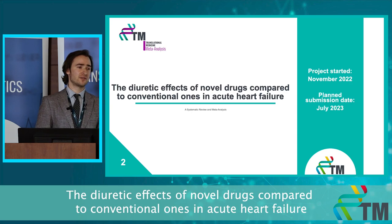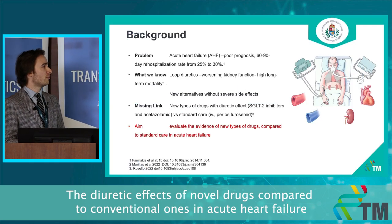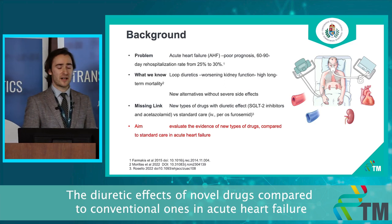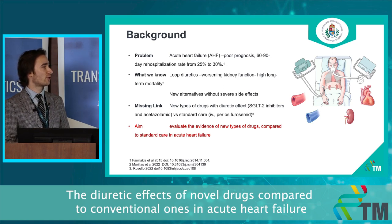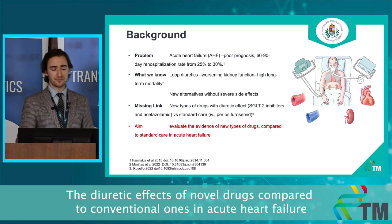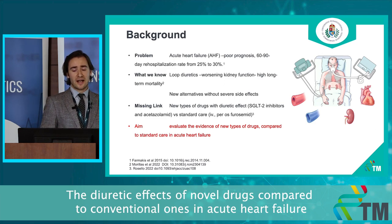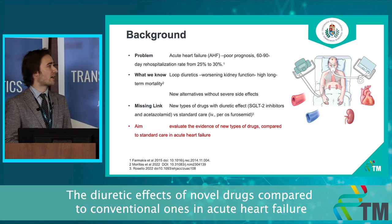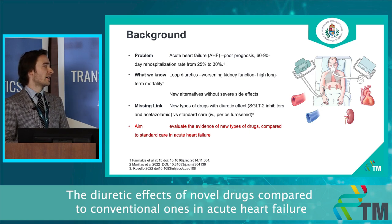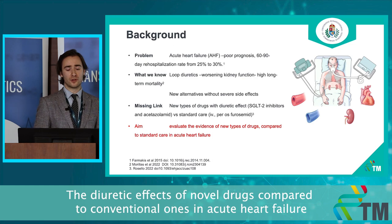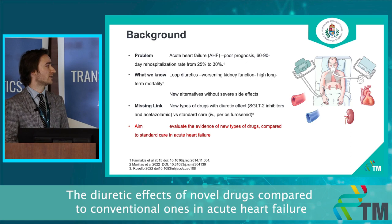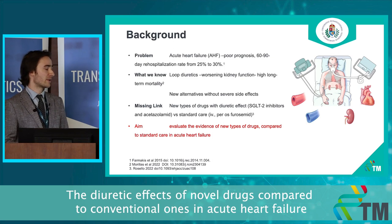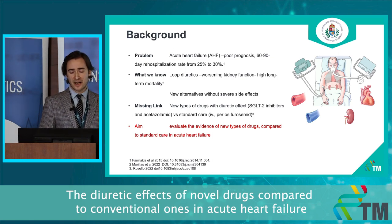For my second project, we are investigating the diuretic effects of novel drugs compared to conventional ones in acute heart failure. It is also a huge problem that acute heart failure has a poor prognosis, and the re-hospitalization rate can reach 30% within 60 to 90 days. We also know that loop diuretics worsen kidney function over the long term, which can cause high long-term mortality. We have some new alternatives without such severe side effects: SGLT2 inhibitors and acetazolamide.